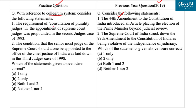The first statement is: the requirement of consultation of plurality of judges in the appointment of Supreme Court judges was propounded in the Second Judges Case of 1993. To answer this, one should understand the evolution of the collegium system through four landmark judgments. In the First Judges Case, the court held that consultation does not mean concurrence — it only implies exchange of views — but it reversed its decision in the Second Judges Case of 1993.